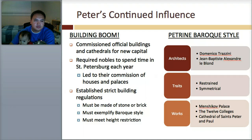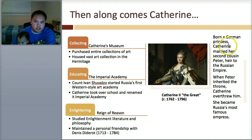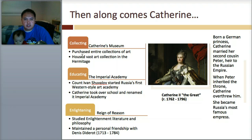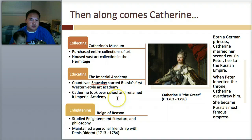After that, there was Catherine — Catherine the Second, or Catherine the Great. She was a German princess who married her second cousin Peter, heir to the Russian Empire. When Peter inherited the throne, Catherine actually overthrew him, and she became Russia's most famous empress. She collected a lot of art and had her own museum with entire collections. Count Ivan Shubilov started Russia's first Western-style art academy, and then Catherine took over the school and renamed it the Imperial Academy.